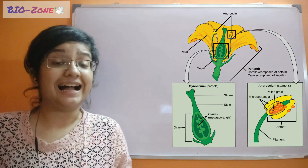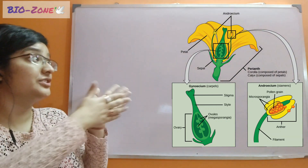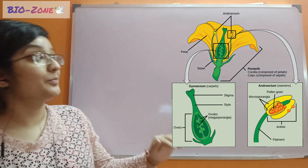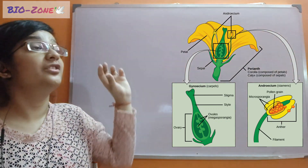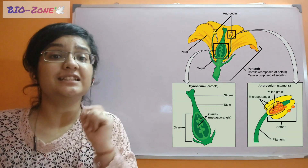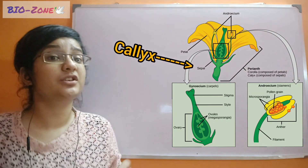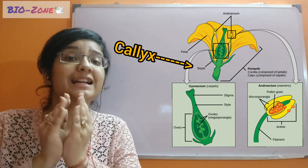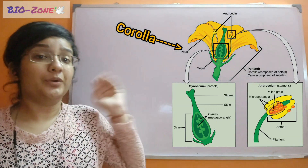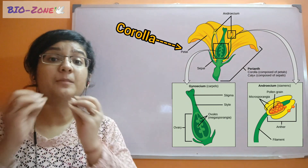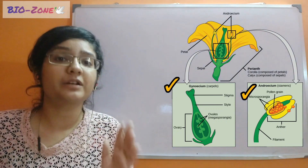We all know that the reproductive part of the plant is called the flower. If we look at the structure of the flower, we can see that it is composed of four portions. From outside, the green portion is the first one — it is called the calyx. This calyx is composed of leaf-like structures called sepals, which generally protect the flower from outside until it blooms. Next is called the corolla, made up of petals. It is the most colorful part of the plant. The remaining two portions are very important for reproduction.